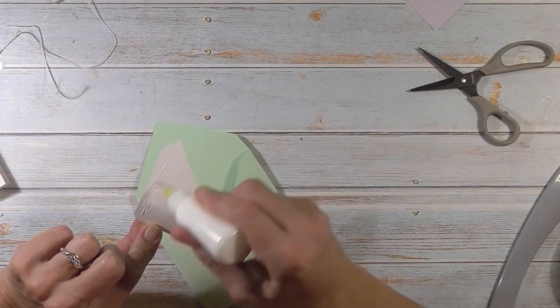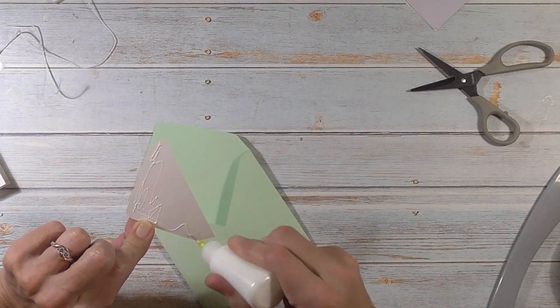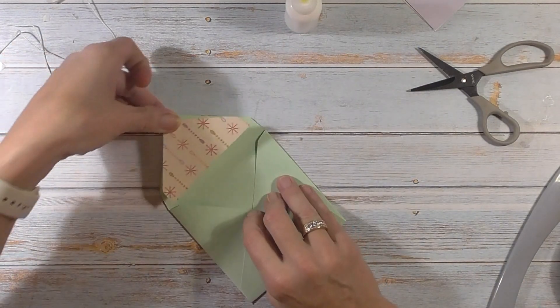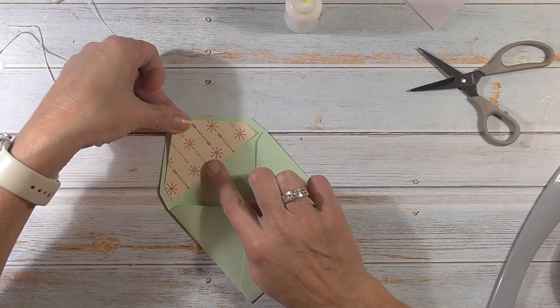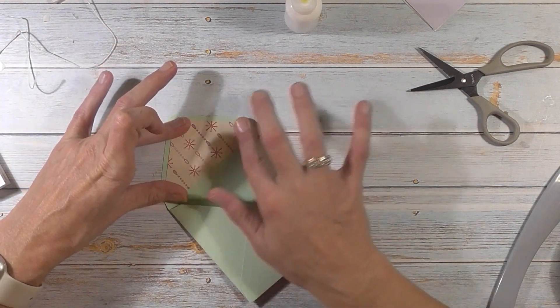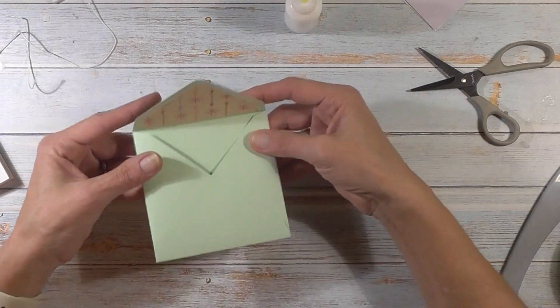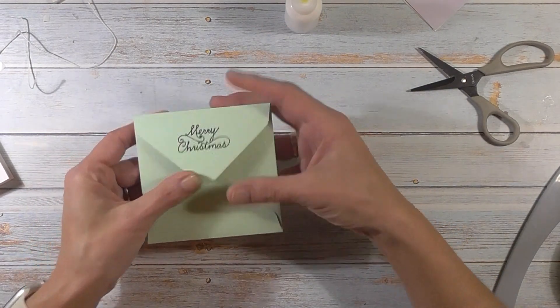And then we're going to put our liner piece on the inside right here. I think, yeah, I'll use my white glue. So you can easily switch this card up for birthday, anniversary, whatever occasion you want. Just change the text on the tag. Alright, so we have that. And then look at that. Close it. It says Merry Christmas.